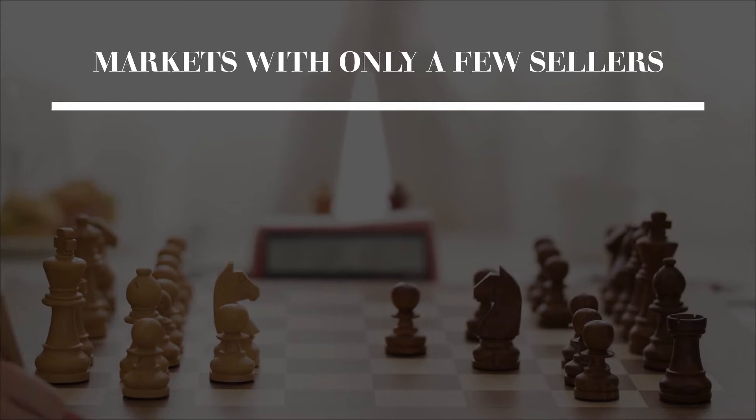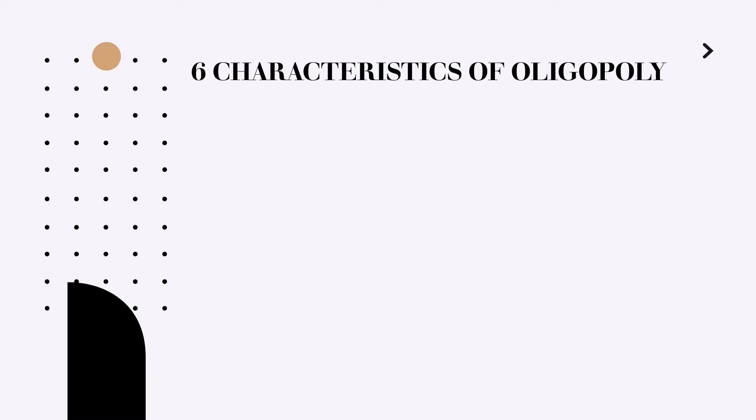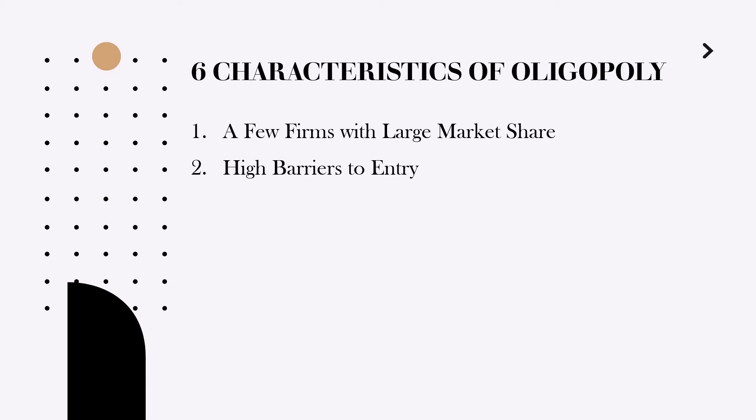Let us start with the definition of an oligopoly. An oligopoly is a market structure in which only a few sellers offer similar or identical products. We have six common characteristics of oligopolies. First, few firms with large market share — although you can have a number of smaller firms in an oligopolistic market, the majority of the market share is controlled by a few large established firms.